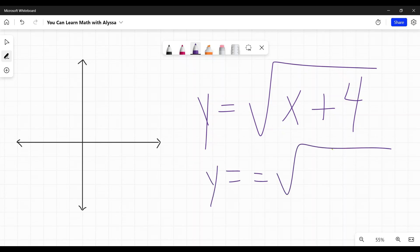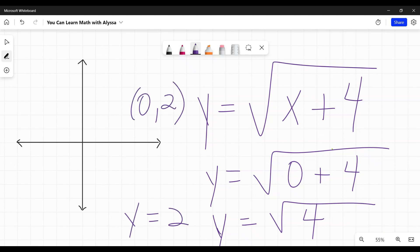y equals, double equals, because that's apparently now a thing, 0 for x plus 4. So y equals the square root of 0 plus 4 is 4. What's the square root of 4? 2. My y-intercept is 0, 2.